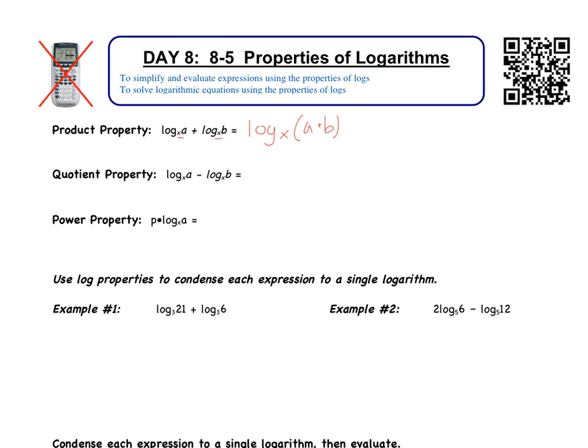The quotient property says that if I'm subtracting two logs, again with the same base — you could probably guess this one. If adding logs becomes multiplication, subtracting logs is going to become division. So this will be log base x of a divided by b. Same base, I can divide the arguments. Now the power property says if I have a coefficient in front of the log, that becomes a power. So this is log base x of a to the power p.